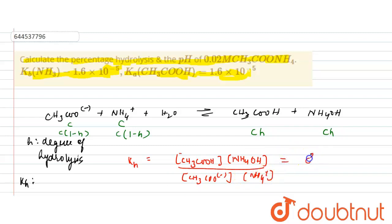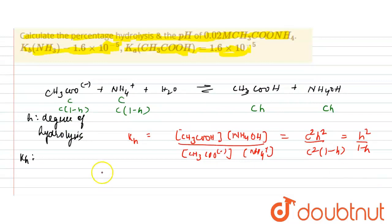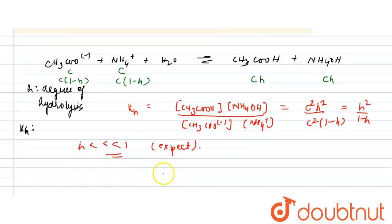From here we get C²H² divided by C²(1−H), which equals H²/(1−H). Since the degree of hydrolysis H is very much smaller than 1, we can approximate KH equals H². This is a very important result.